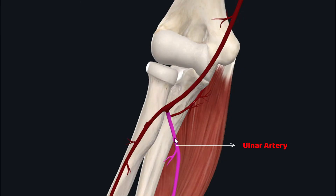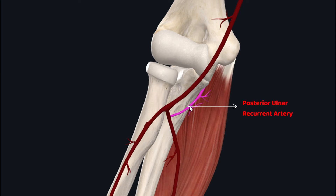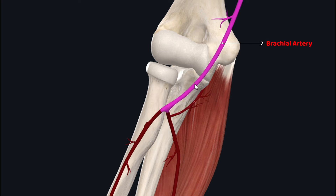The flexor carpi ulnaris muscle receives its arterial supply from the ulnar artery, which supplies it by giving off a small branch called the posterior ulnar recurrent artery. The ulnar artery itself arises from the brachial artery.